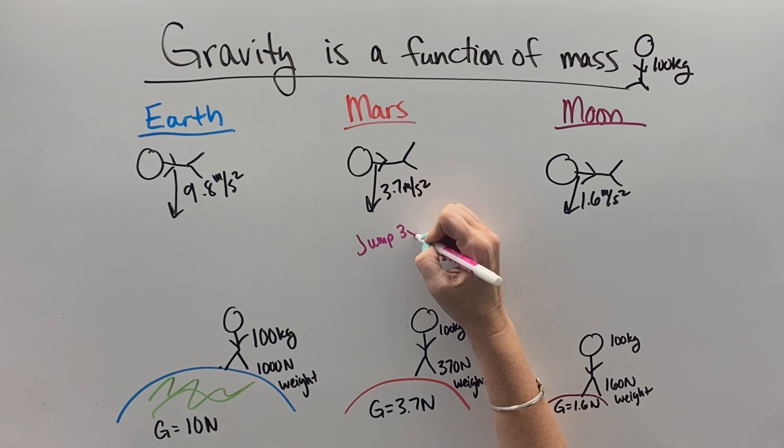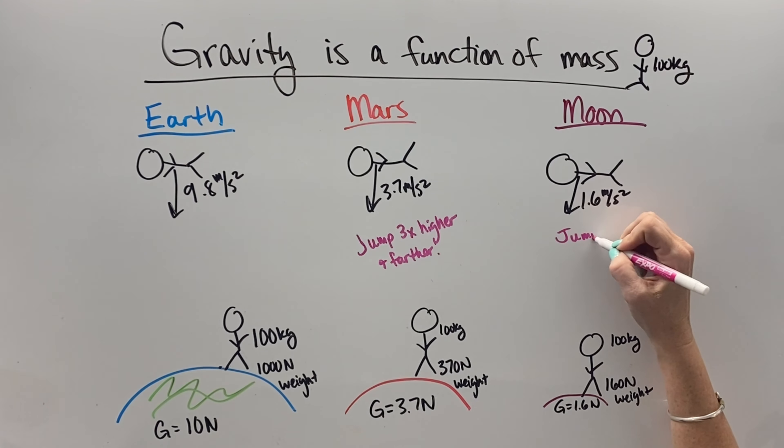If you were to jump on Mars, because there's a third of the gravity, you would jump three times higher and three times farther. And on the moon, you could jump six times higher and six times farther, because the gravity is one-sixth what it is on planet Earth.